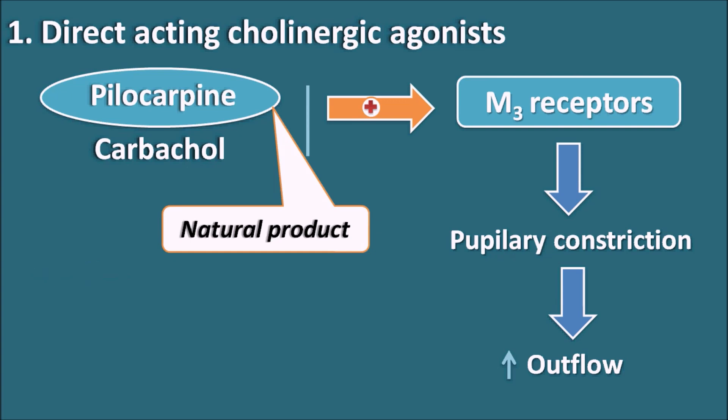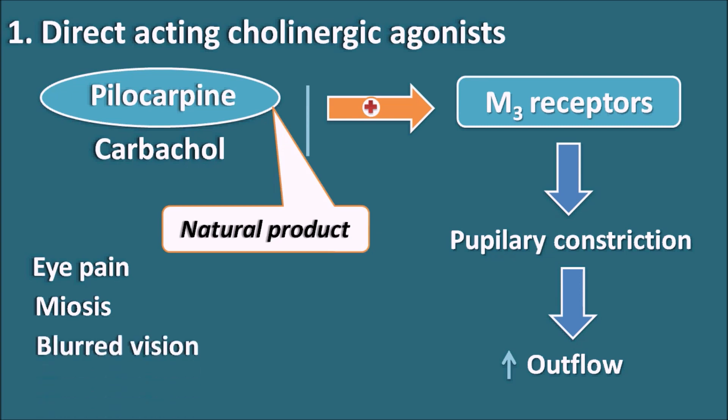Side effects of direct acting cholinergic agonists include eye pain, miosis (pupillary constriction), blurred vision, and headache.